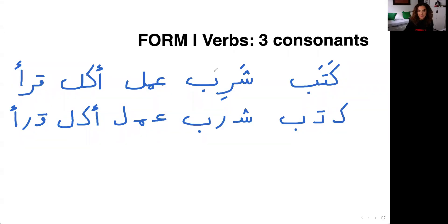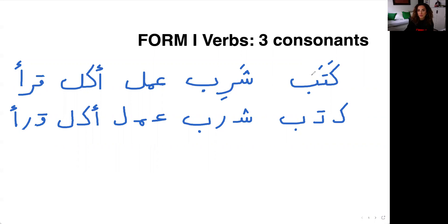The examples I'm going to be using in this video are Form 1 verbs with three consonants. However, the conjugation — the prefixes and suffixes — are the same for all forms of the verbs. To keep it simple, we're going to use three-consonant verbs, so Form 1 verbs. We're going to use verbs like kataba — you see it's three consonants. The short vowels don't count.